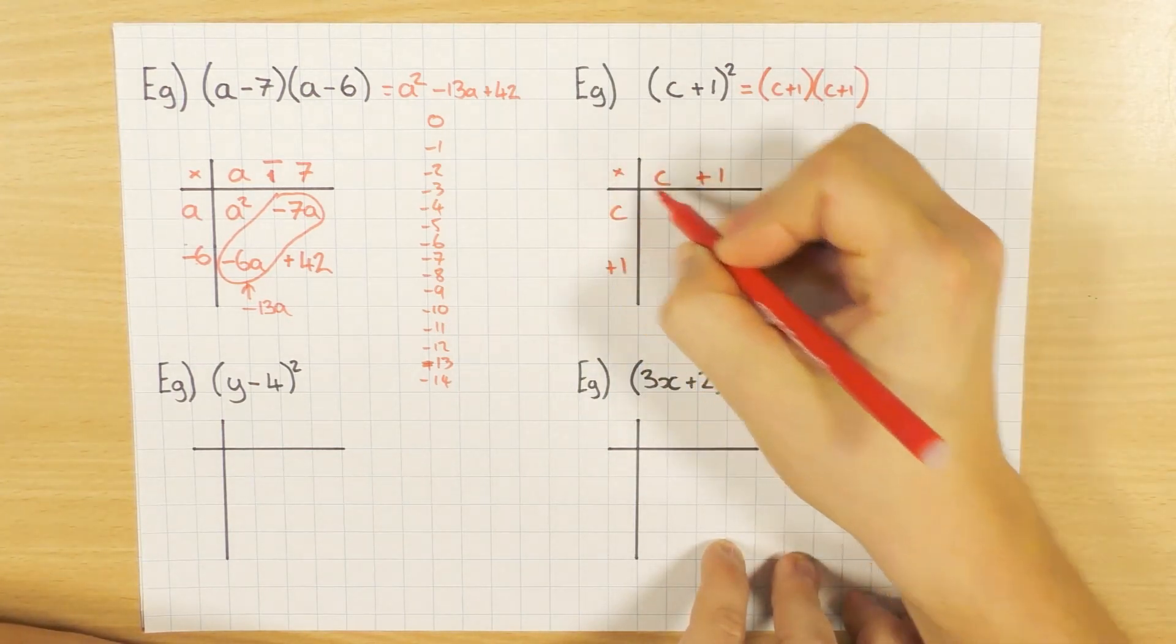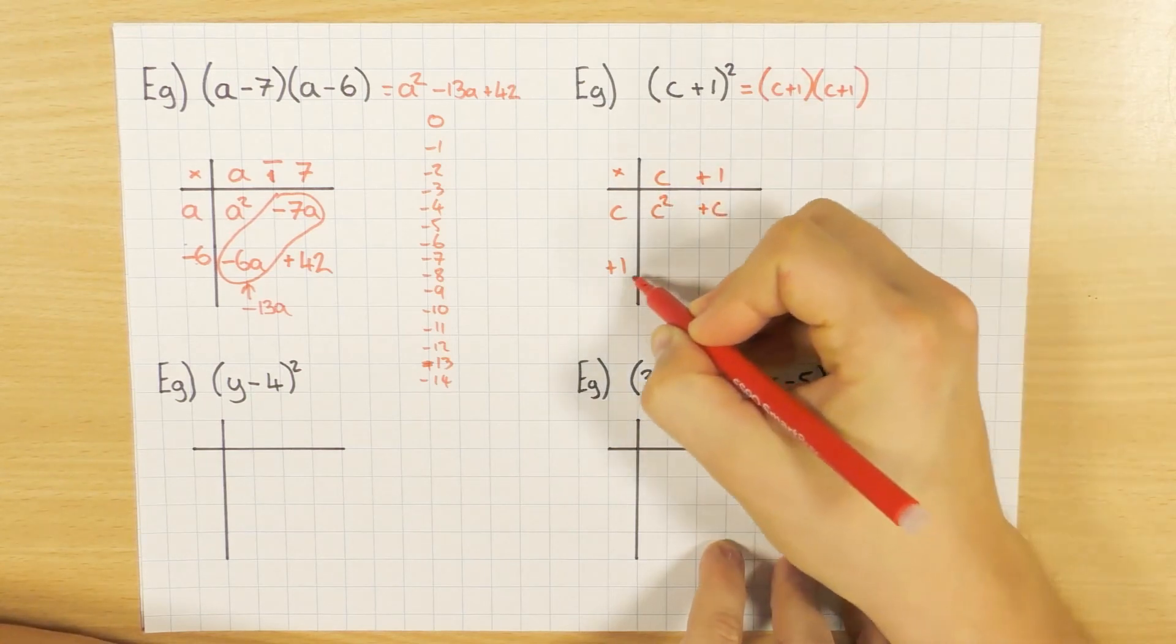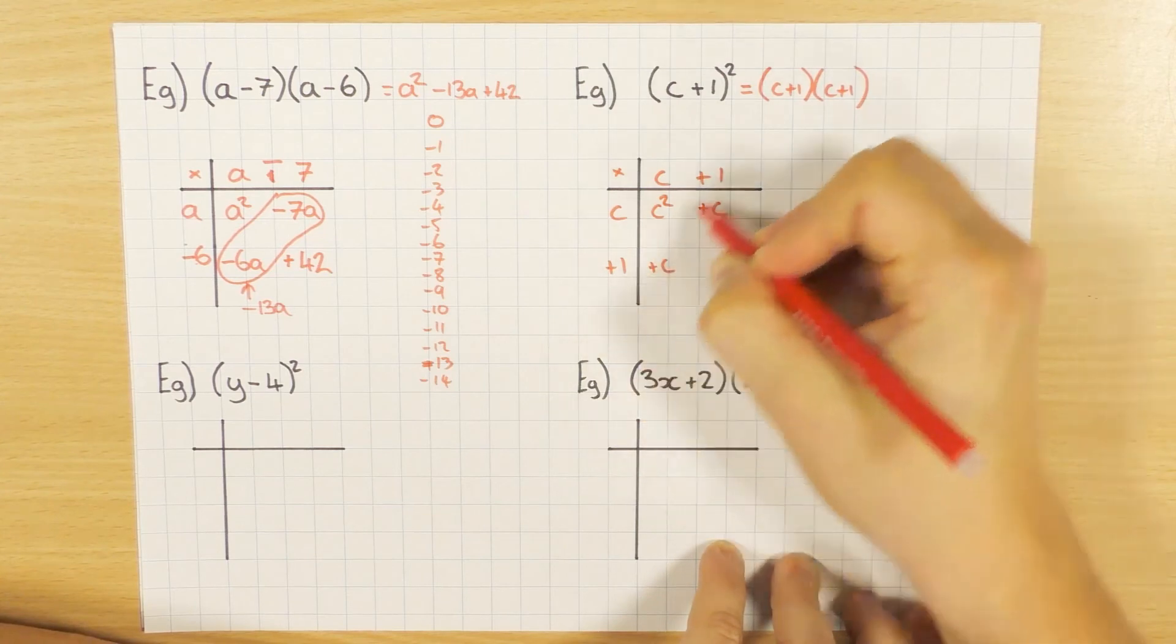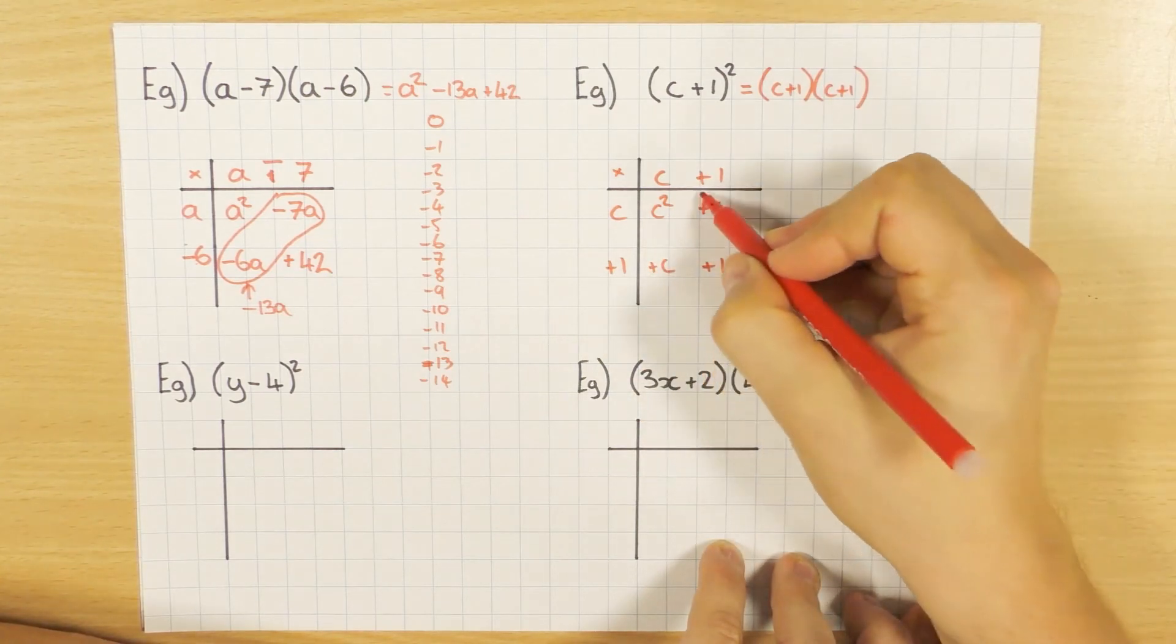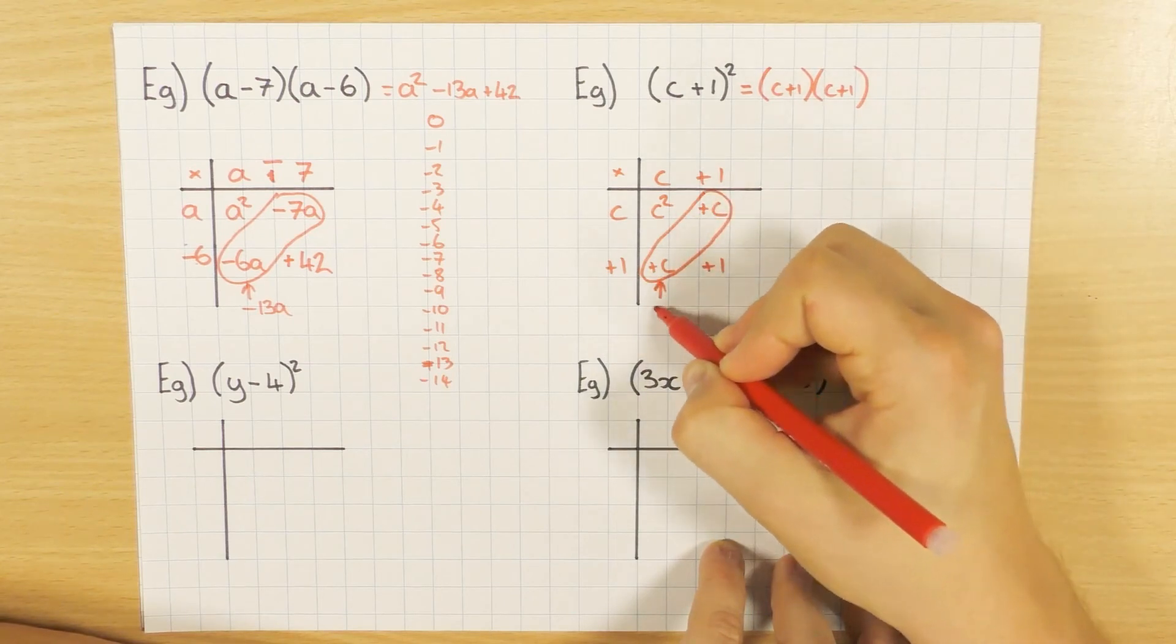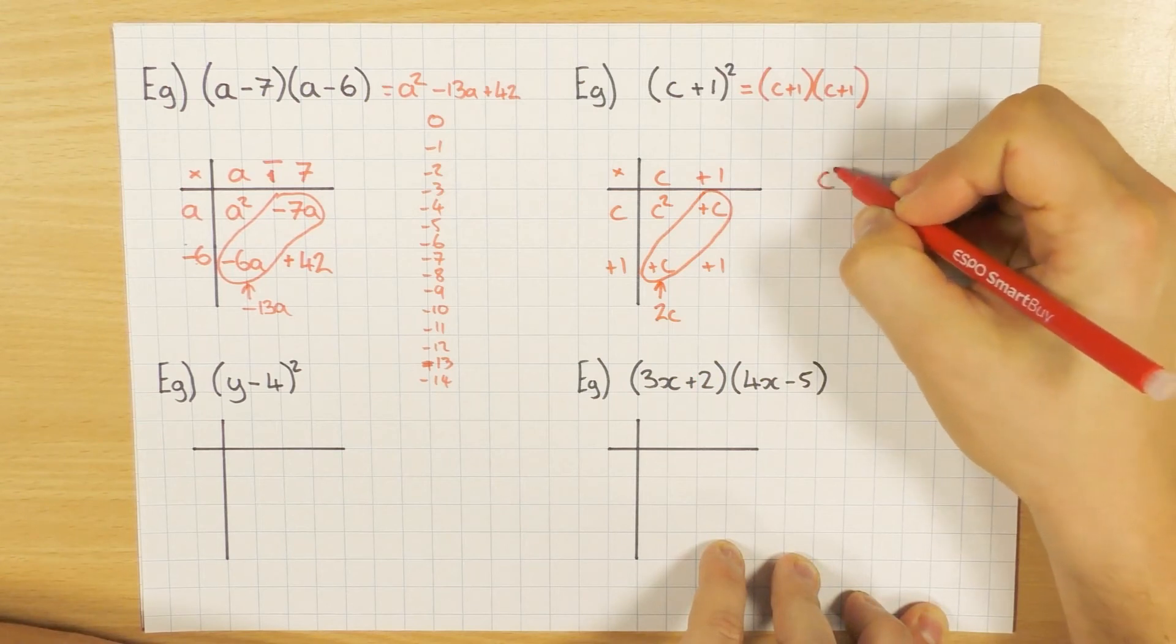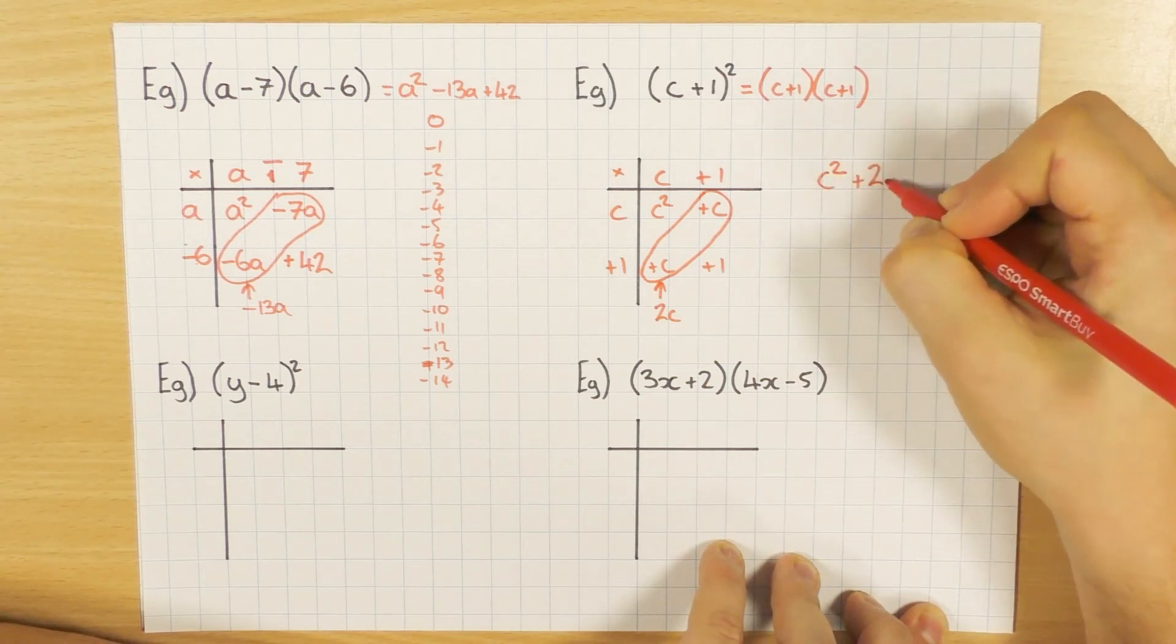Again we are timesing, so c times c is c squared, c times 1 is just c, c times 1 is just c, 1 times 1 is 1. Again I can simplify this. One c plus another c is 2 c's. So my final answer: c squared plus 2c plus 1.